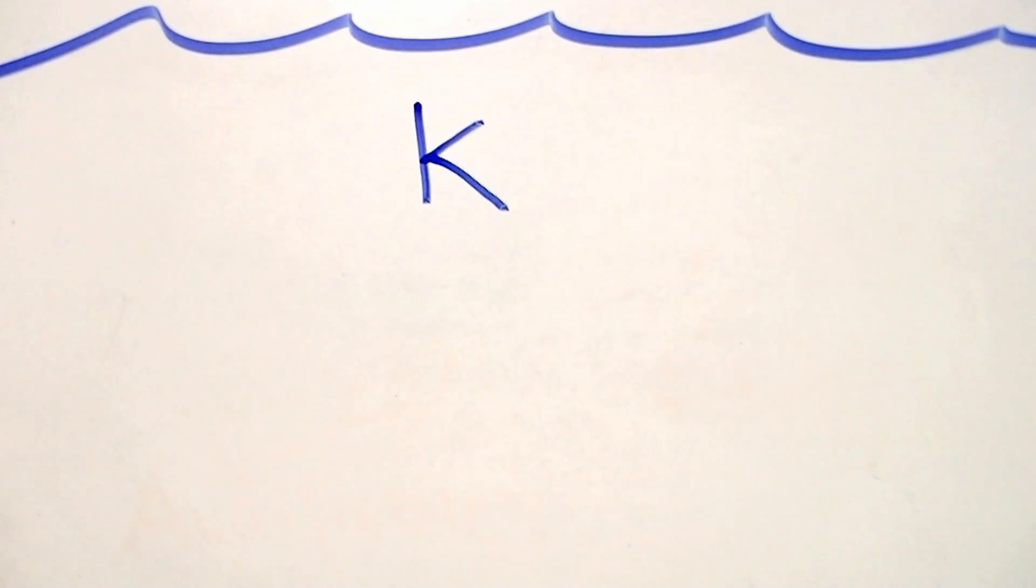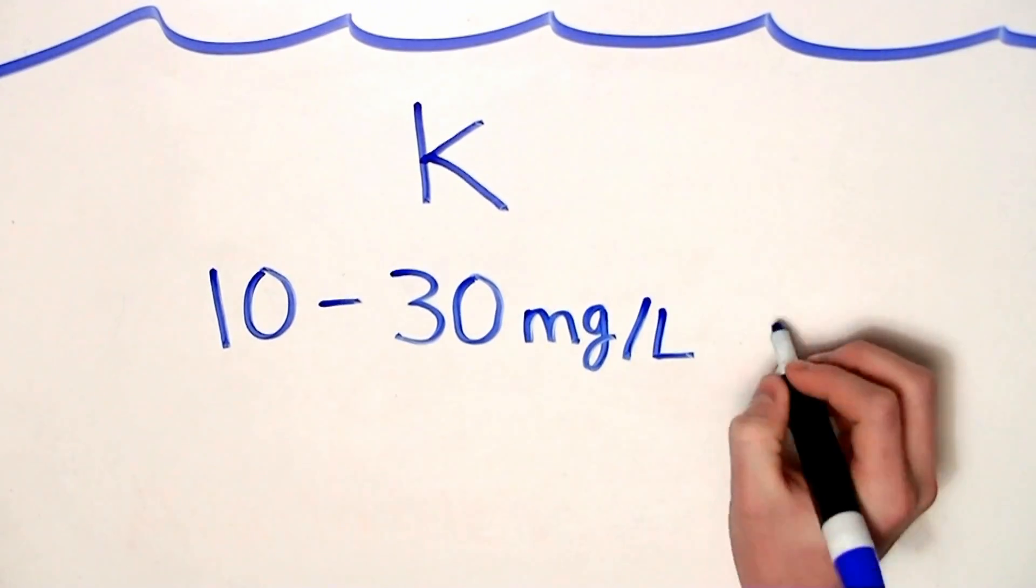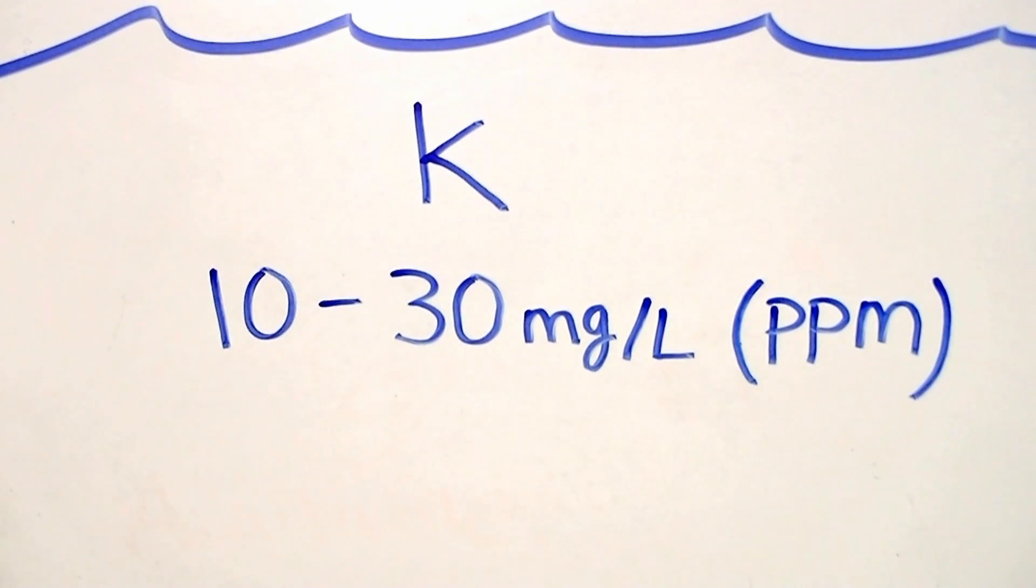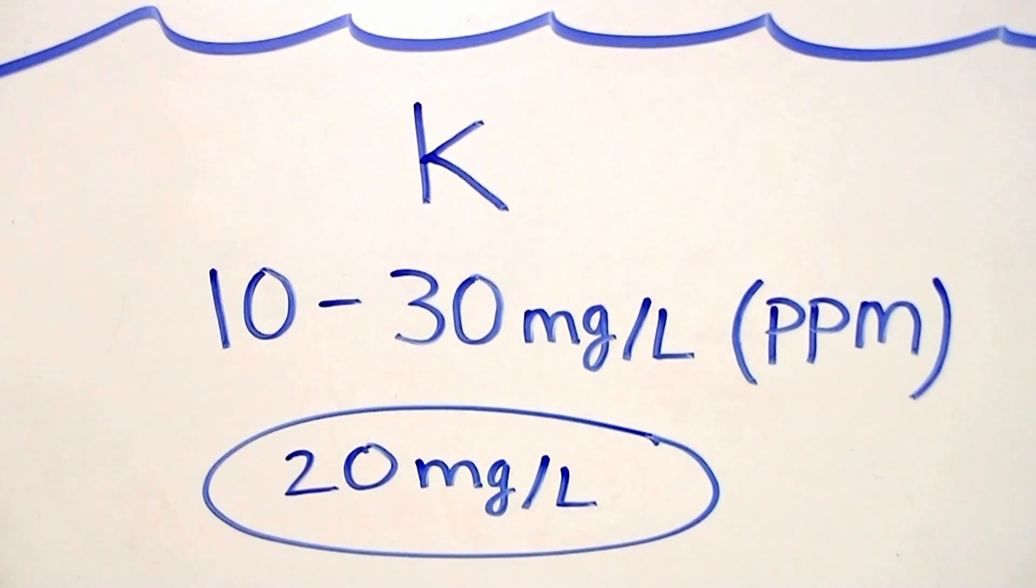The estimative index suggests that we maintain a concentration between 10 and 30 milligrams per liter potassium in our aquarium. Don't forget that milligrams per liter is the same as saying parts per million. We're going to aim to dose our aquarium with 20 milligrams per liter. That way we're right in the middle of this index.